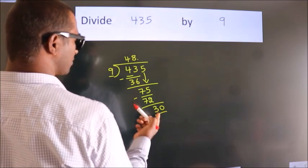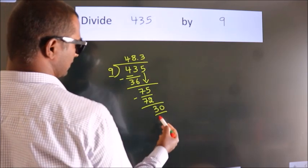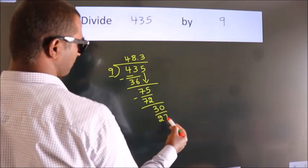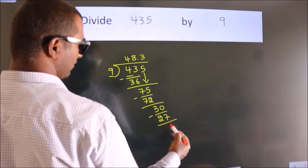A number close to 30 in the 9 table is 9 times 3 equals 27. Now we subtract. We get 3.